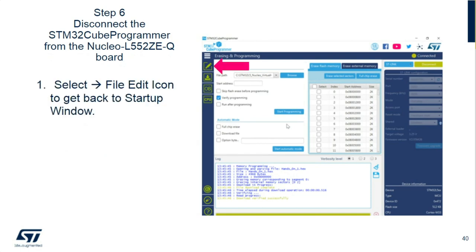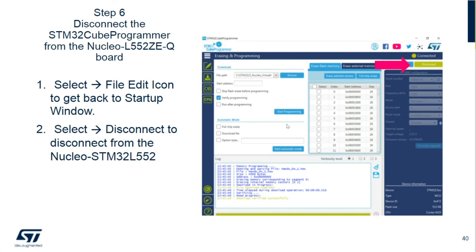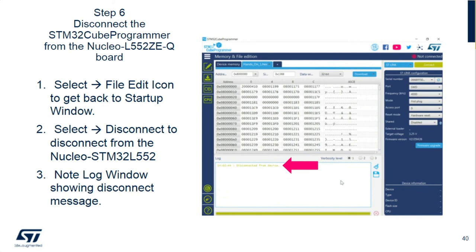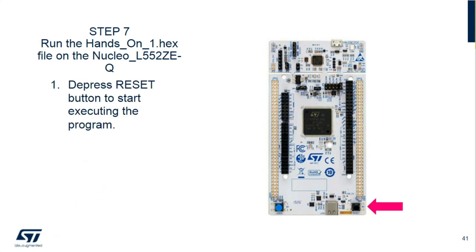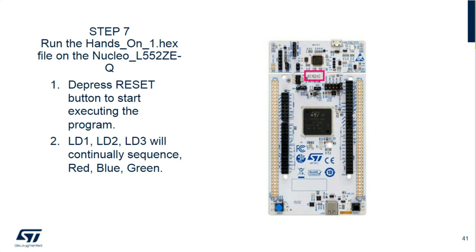Go back to the file edit icon — it will open the tabs where we loaded the hex file. Disconnect from the STM32 L5 Nucleo board; the log window will give you a disconnect message. Then close the actual hex file so we're starting from a known point when we begin hands-on number two and three. To execute the code we just downloaded, press the reset button, and LEDs one, two, and three — red, blue, and green — will sequence at a faster rate than you saw previously with the default configuration.